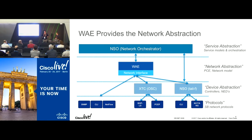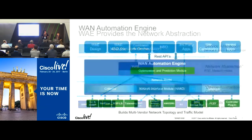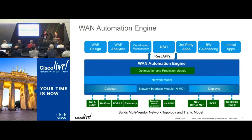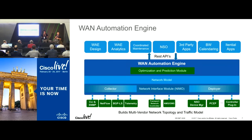Right above that, we have the service orchestration layer — we show NSO as that, but it could be any third party with an API interface down into WAE. In terms of the actual WAN Automation Engine, what we have is a collector. Our collector interfaces using XTC and NSO to bring in information about the network: the topology, utilization, and any SNMP statistics. With that, we build a network model — an abstracted representation of your network in terms of topology as well as the flow of demands and traffic. Using the network model, we run optimization and prediction algorithms against it.